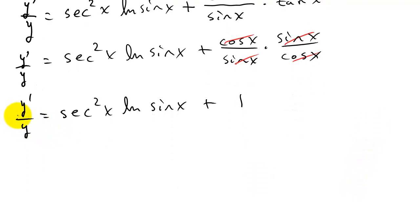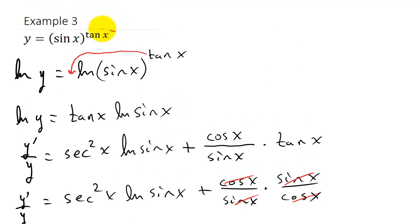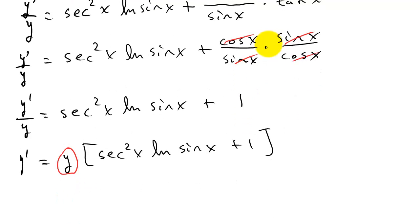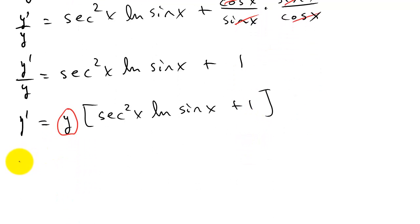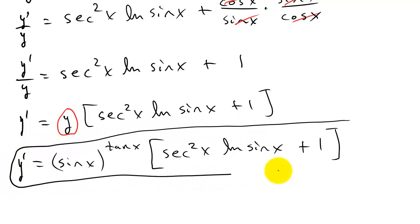Now I multiply everything by y — it cancels on the left — so y prime equals y times secant squared x times natural log sine x plus 1. Now I have to get all of this in terms of x. What does y equal? y is equal to sine x raised to the tangent x. So I plug that in: y prime equals sine x raised to the tangent x, times secant squared x times natural log sine x plus 1. And this would be my final answer.